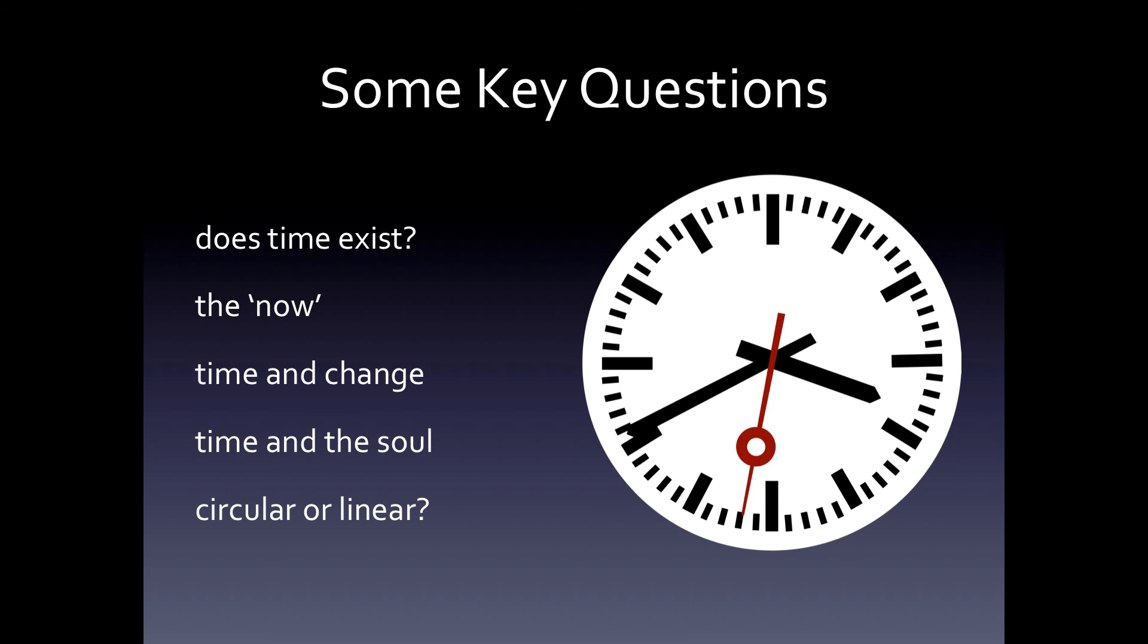The fifth and final question is about the direction of time. Suppose that time exists, then do moments of time ever come back? Or should we rather think that the past is gone forever? In philosophical terms, is time circular, or is it linear?